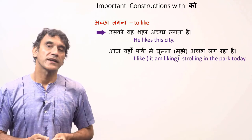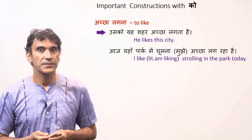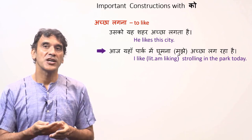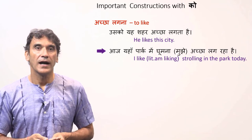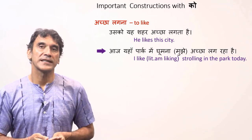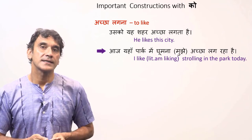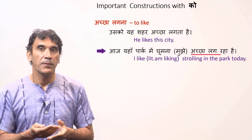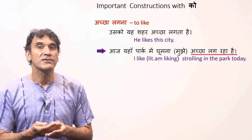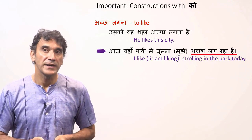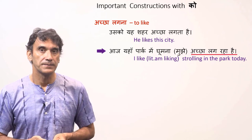The phrase achha lagna is commonly used in the meaning of 'to like.' Usko ye shahir achha lagta hai — He likes the city. Aaj yahaan park mein ghumna mujhe achha lag raha hai — I like strolling in the park today. In the last sentence, the verb achha lagna is in the present continuous. The literal translation would be 'I am liking to stroll in the park today.'